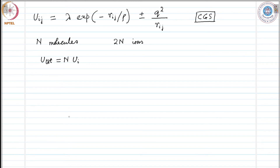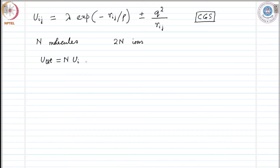We can write the total energy as N times u_i. We don't write 2N times u_i because u_i considers the interaction energy coming from two ions, so we should not double count. The total lattice energy is defined as the energy required to separate the crystal into individual ions at infinite distances where there is no interaction — that amount of energy is what the lattice stores.